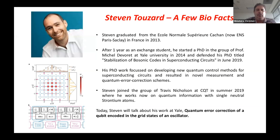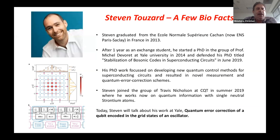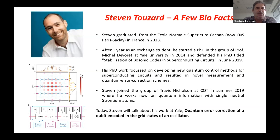After his PhD, Stephen joined the group of Travis Nicholson at CQT last summer in 2019, where he works now on quantum information with single neutral strontium atoms. Today, Stephen will talk about his work at Yale, about quantum error correction of a qubit encoded in the grid states of an oscillator. Before I hand the floor to him, if you have questions, please just interrupt Stephen to ask — I think it will be more dynamic this way.